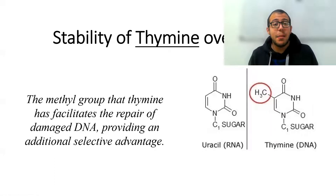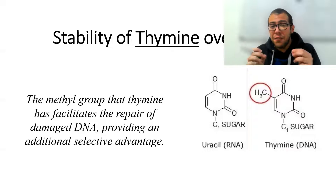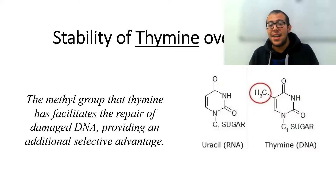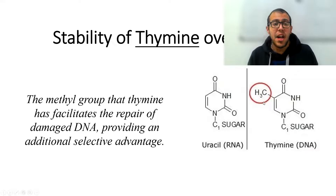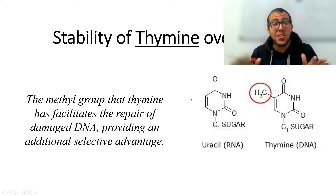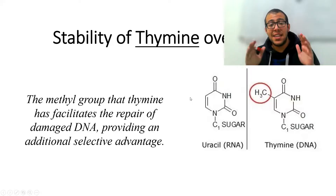And finally, the stability of thymine over uracil. The difference in structure is that there is a methyl group present on the 5-prime carbon in thymine, whereas that is not present in uracil. Everything else in the structure is exactly the same.